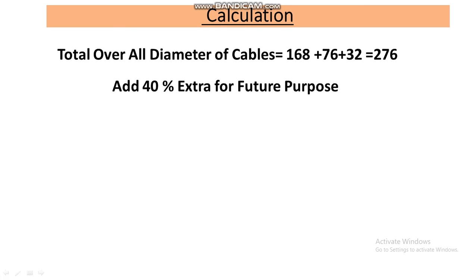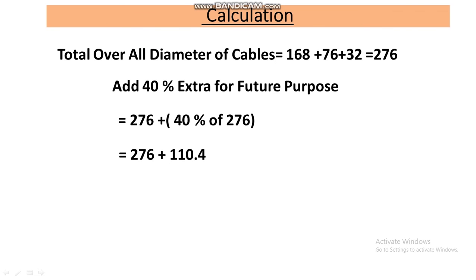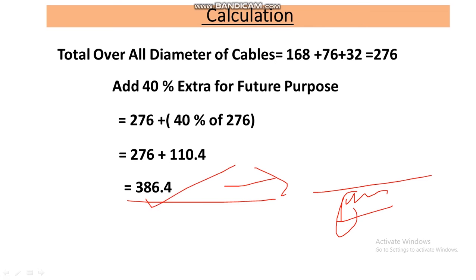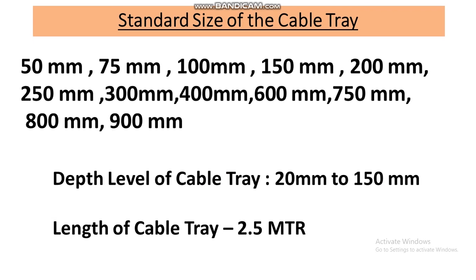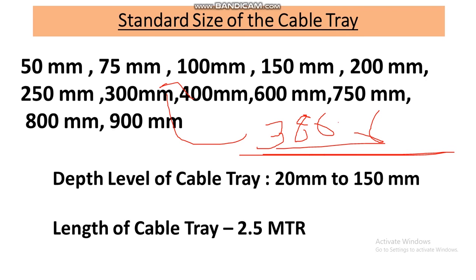Now we add 40% extra for future use — this is the safety factor. So 276mm + 40% of 276mm = 276 + 110.4 = 386.4mm. This is the required width of the cable tray. Looking at the standard sizing table, we always go for the next higher value, so 400mm is the closest standard size above 386.4mm.